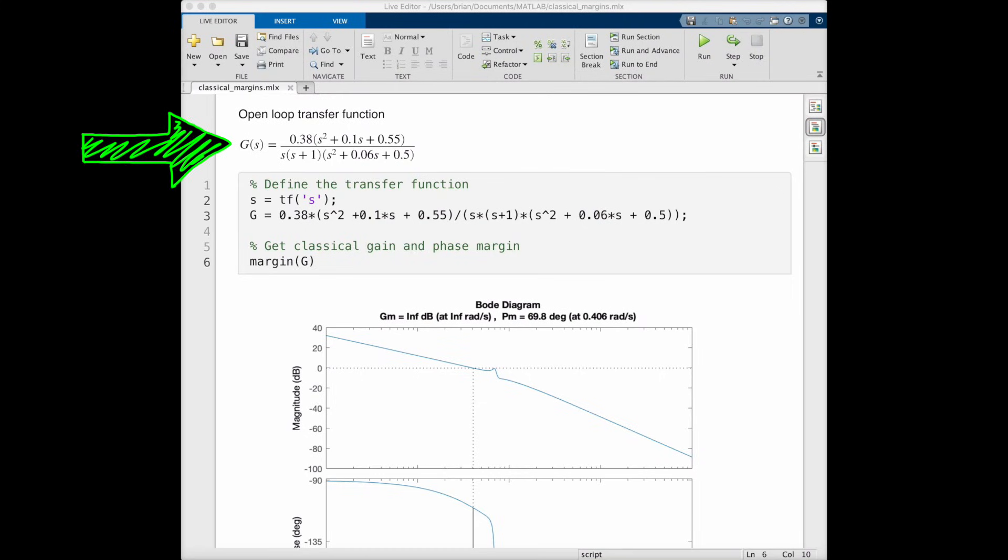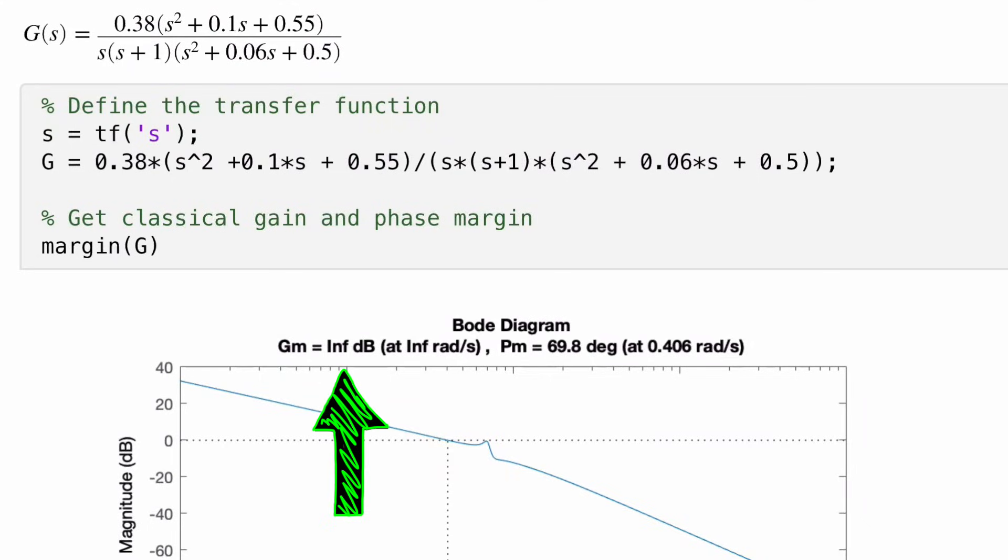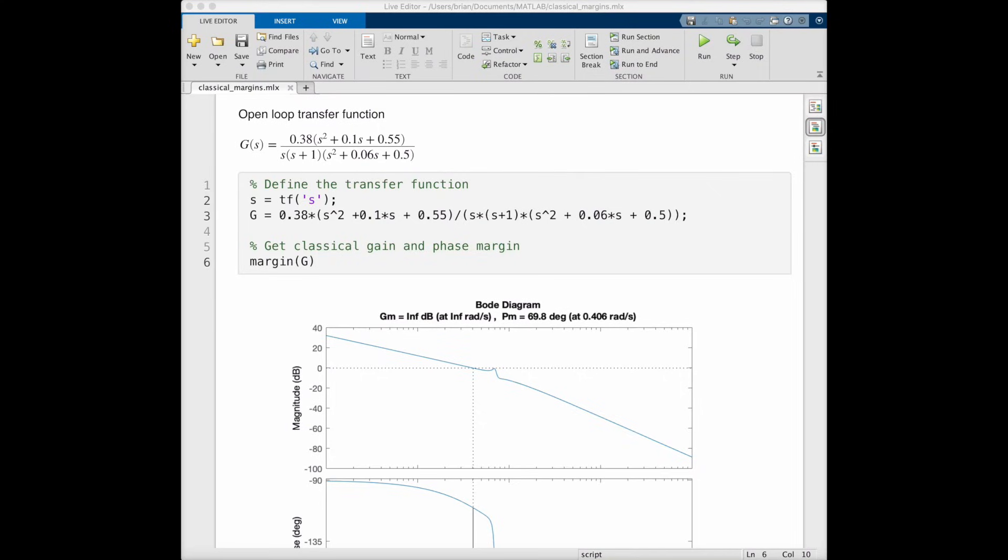For example, take this open loop transfer function G. I can solve for the classical gain and phase margins with the function margin in MATLAB. And here you can see that this system has infinite gain margin, meaning no amount of additional gain will make the closed loop system unstable. And it has almost 70 degrees of phase margin at .4 radians per second, which is equivalent to about 3 seconds of delay margin. So this feels like a pretty robust system since it has such high margins.